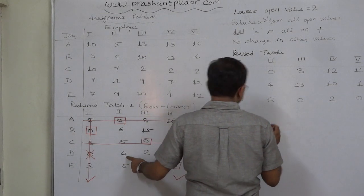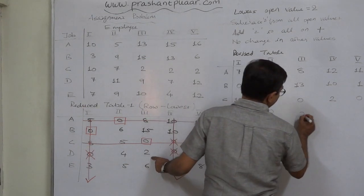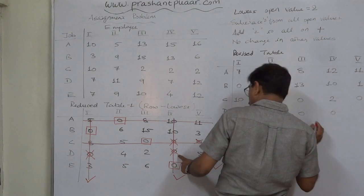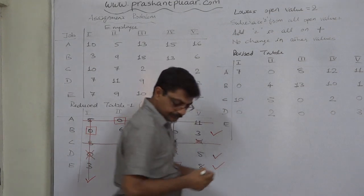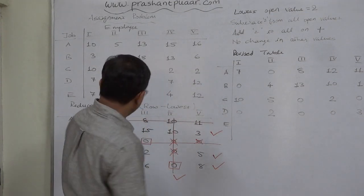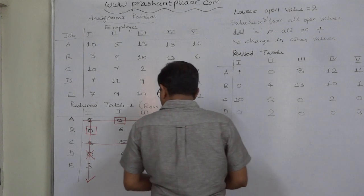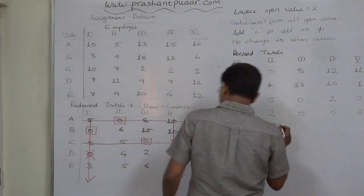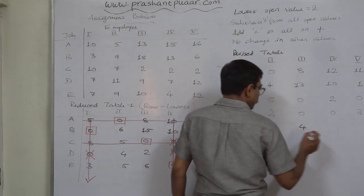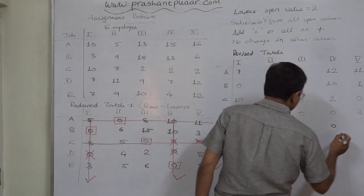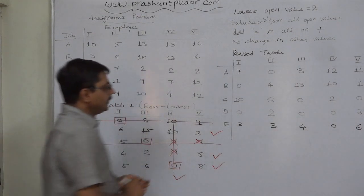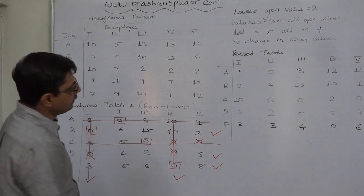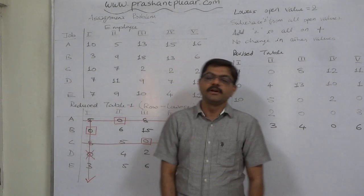Continuing: 4 is open so 4−2=2, 5 is on a line so it remains 5, 4 is on a line so it remains 4, open values 2−2=0, 0 stays on line, 5−2=3, 6−2=4, 0 stays on line, 8−2=6. This gives us the revised table.